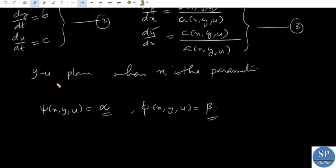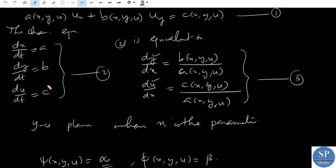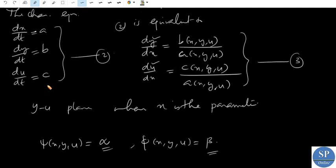So, when we vary the parameters α and β, we obtain the two-parameter set of solutions or two-parameter set of curves generated by the intersection. Lagrange assumed we are going to assume the solution of the characteristic equations.